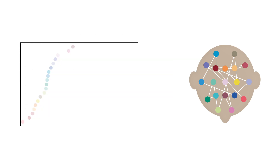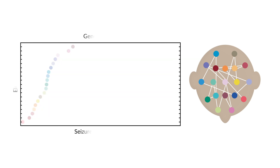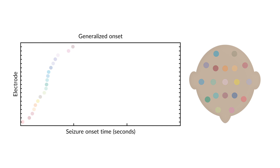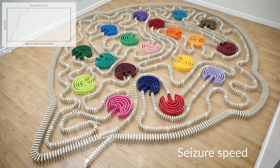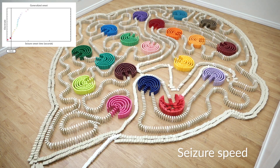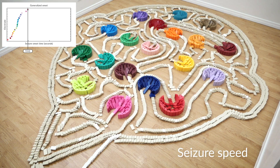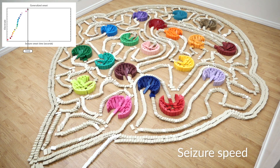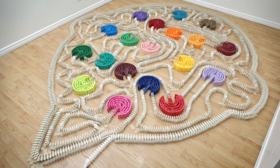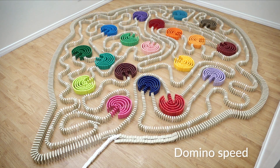If we pull out the start points for each electrode, we can map the domino effect on the head like this. We can then show this domino effect in dominoes. Here it is in the real time of the seizure. If you missed it, let's see that again. Let's slow it down to domino speed.